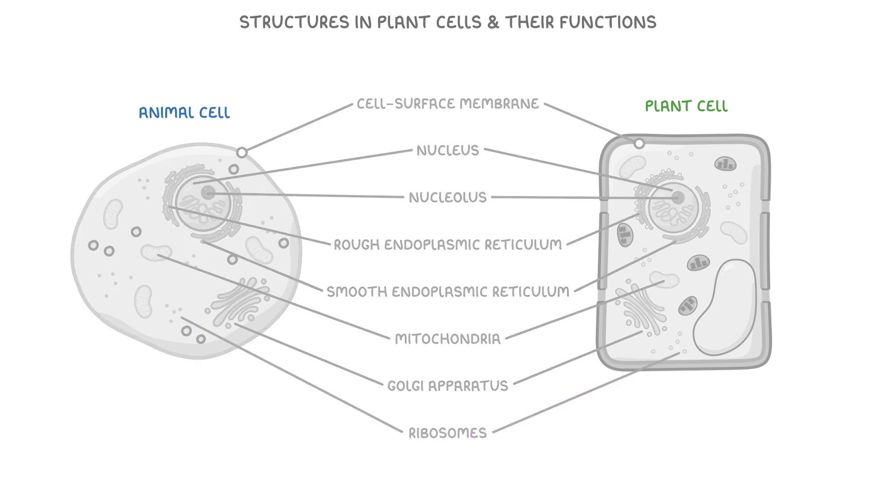But plant cells also have some extra features that make them different from animal cells. These include a cell wall, chloroplasts, and a vacuole. Now technically the vacuole can sometimes be found in animal cells too, but in plant cells vacuoles are particularly large and also permanent, whilst in animal cells they're usually small and temporary.